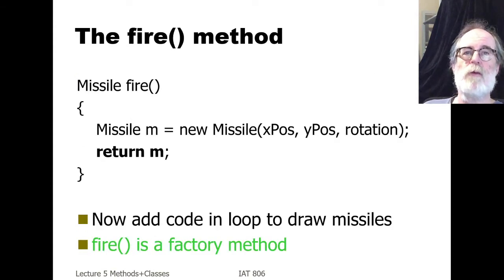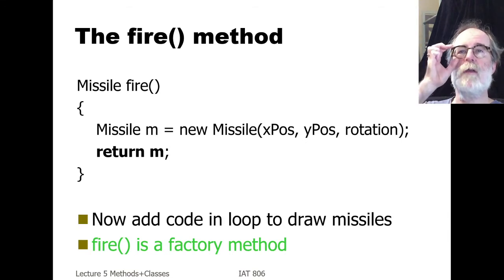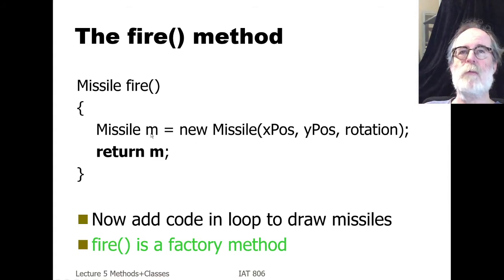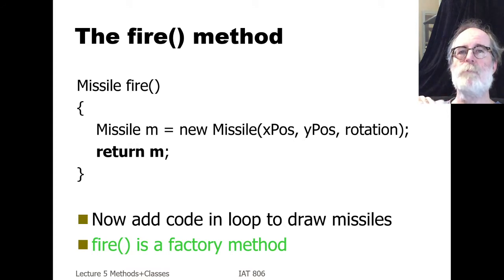Here's the fire method — we've shown this already. The idea is that inside ArmedRocket there's a method named fire. It returns a missile; it takes the xPos, yPos, and rotation fields from ArmedRocket, copies those into the constructor for Missile, calls the constructor, and hands the constructed object back to variable m, which is then returned immediately to the caller of fire. We'd also need code in the loop that draws missiles. Fire is a factory method because it constructs missiles.